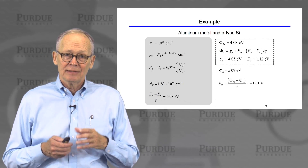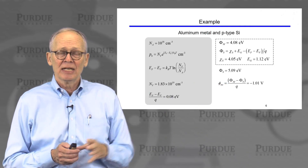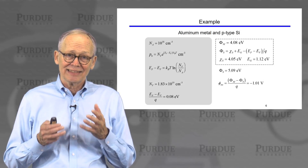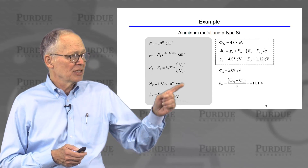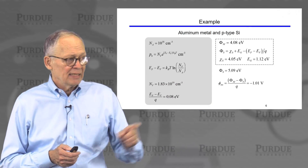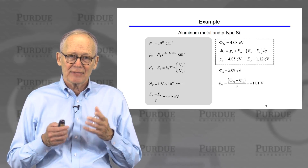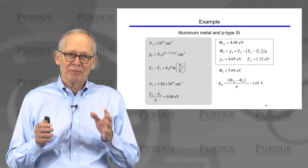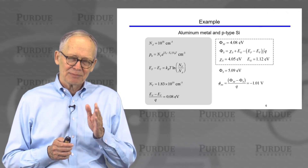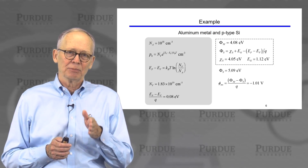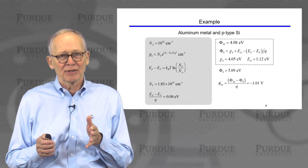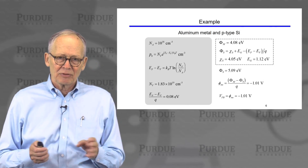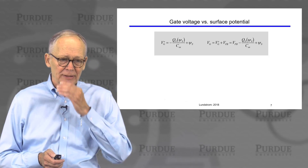The semiconductor's work function is the sum of the electron affinity, the band gap of the semiconductor, minus the correction for the Fermi level being 0.08 eV above the bottom of the conduction band. The electron affinity of silicon and the band gap of silicon are both known. Putting in numbers, we find the work function of the semiconductor is 5.09 electron volts — larger than the work function of the metal. The metal-semiconductor work function difference, phi ms in volts, is minus 1.01 volts. That means in this particular MOS capacitor, about negative 1 volt on the gate is the point at which the bands are flat — that's our reference point.